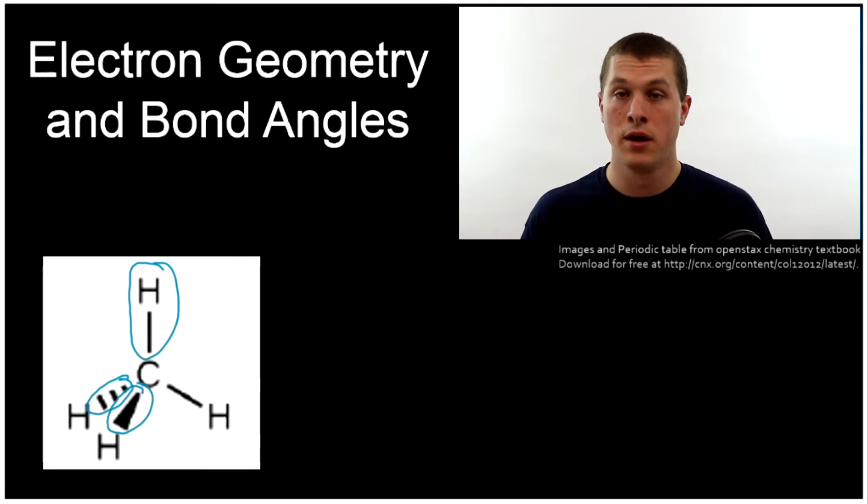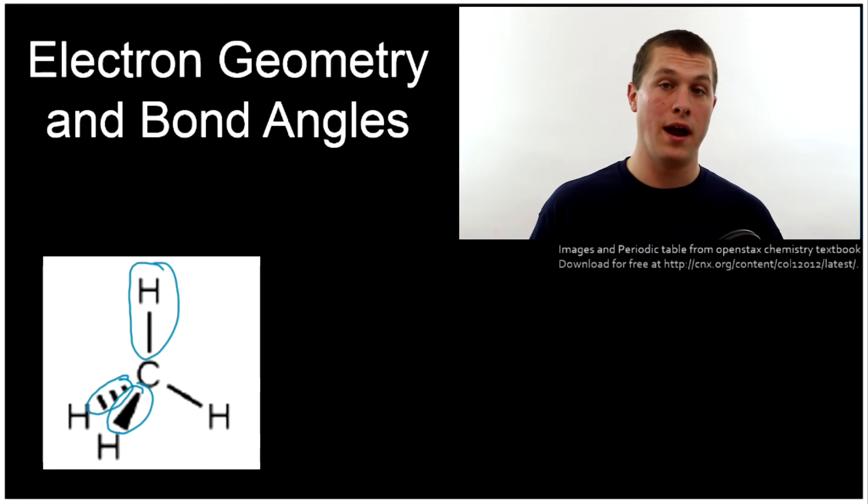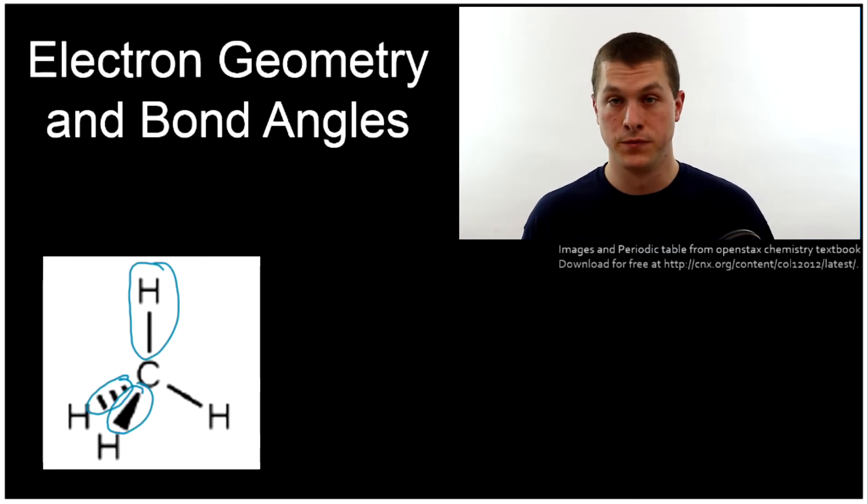That gives you some idea of what we're talking about here: how the electrons or the bonds are oriented around the central atom. We're going to look at a bunch of different molecules that have different numbers of electrons around them and talk about what shape that gives their electron geometry. Importantly, this is different from molecular geometry. Molecular geometry is the shape of the molecule, whereas electron geometry is the shape of the electrons around your central atom, whether they're lone pairs or bonds.